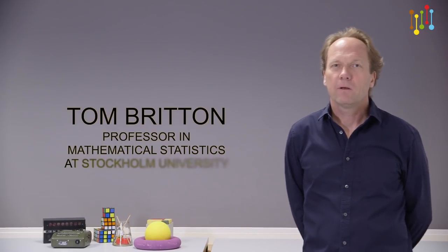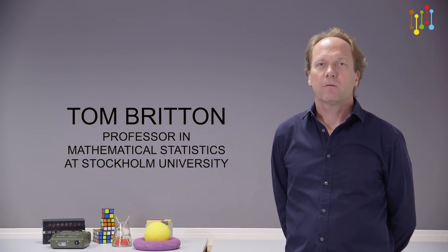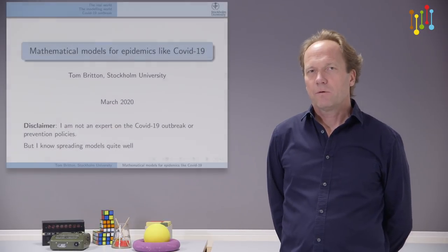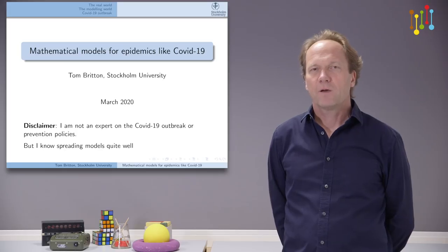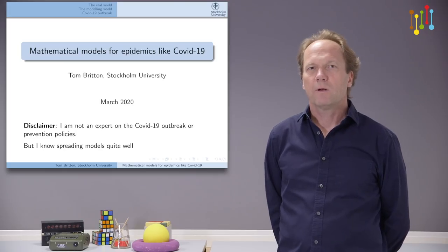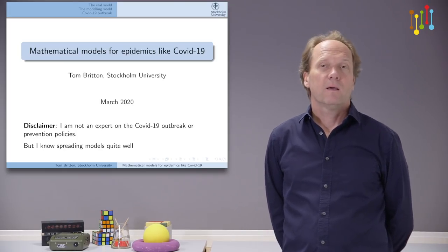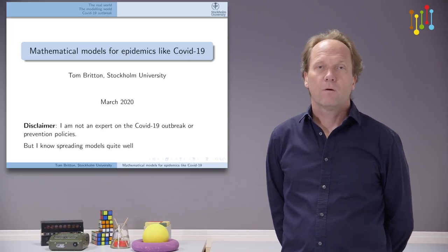Hi, my name is Tom Britton. I'm a professor at the Department of Mathematics at Stockholm University. My background is probability and statistics, where I've been doing research for the last 20 years, and quite a lot of my research has been in infectious disease modeling. That is what I will talk about today, with a particular focus on the current corona outbreak.